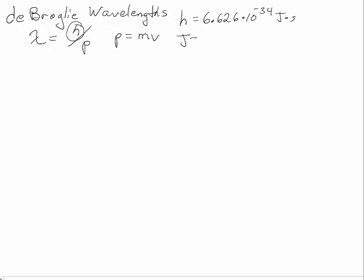A joule is defined as a kilogram meter squared per second squared. So this means that our mass has to be in kilograms and our velocities will be meters per second, just like when we were working with the speed of light.